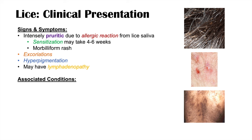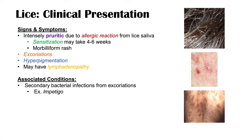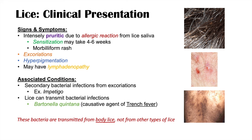Associated conditions of lice include secondary bacterial infections from excoriation — if an individual scratches enough to break the skin barrier, bacteria can enter, including impetigo. Lice can also transmit bacterial infections themselves, including Bartonella quintana, the causative agent of trench fever, and Rickettsia prowazekii, the causative agent of typhus. This makes lice potentially very detrimental to an individual's health.